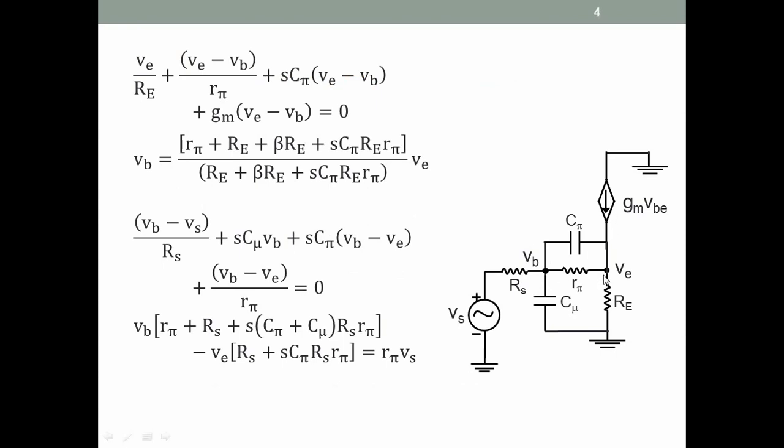The circuit we will get is this. We will have two nodes and we will write two nodal equations. For the emitter node, we get ve/RE, (ve − vb)/rπ, (ve − vb)·sCπ, plus gm(ve − vb)—four terms. They have only ve and vb. So we multiply out by RE and rπ, and then we can write vb in terms of ve. This big expression—this RE into (1 + β)—we will get in the numerator and denominator.